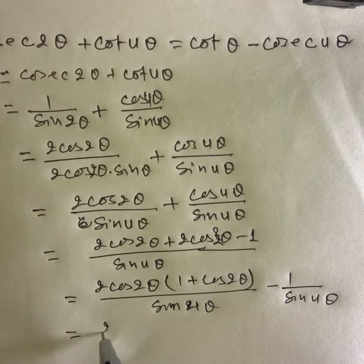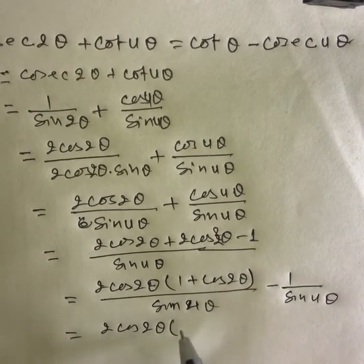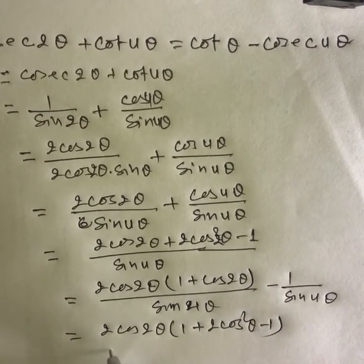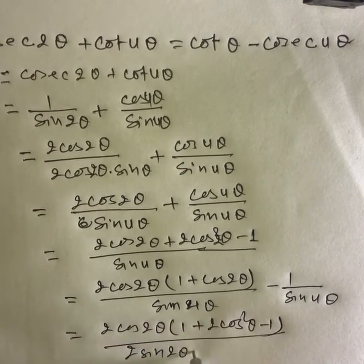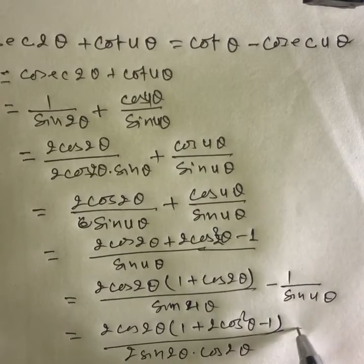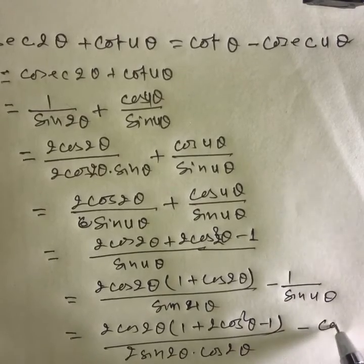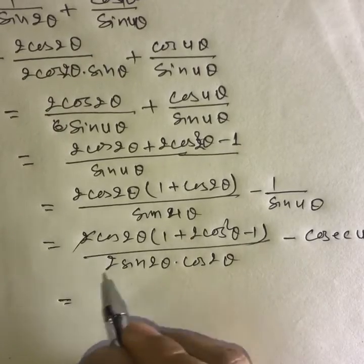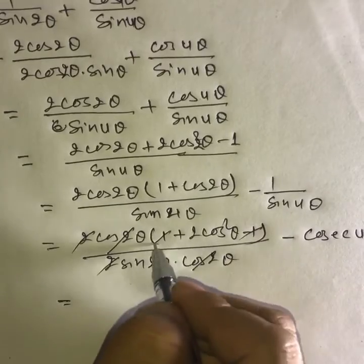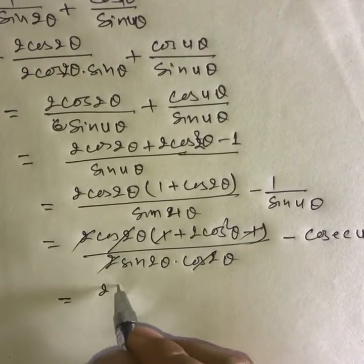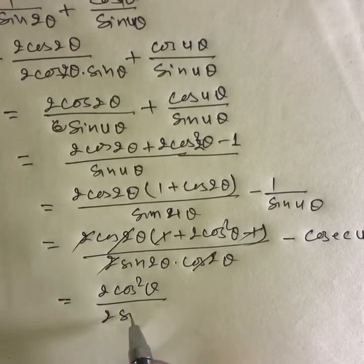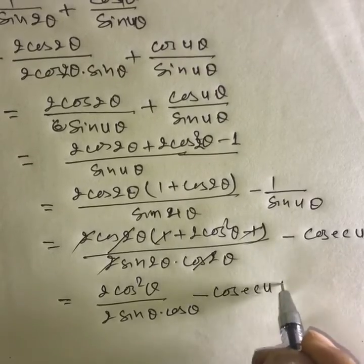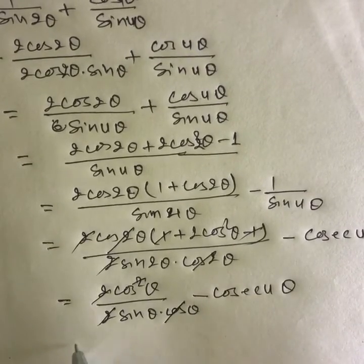Minus 1 over sin 4 theta equals 2 cos 2 theta. Using the formula 1 plus cos 2 theta equals 2 cos squared theta minus 1, over 2 sin 2 theta into cos 2 theta, minus 1 over sin 2 theta cos 2 theta. Simplifying: cos 2 over 2 sin 2 theta cos 2 theta minus cos 2 theta.